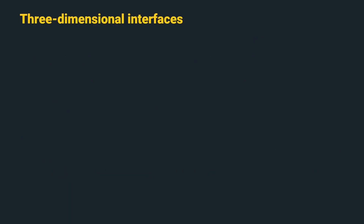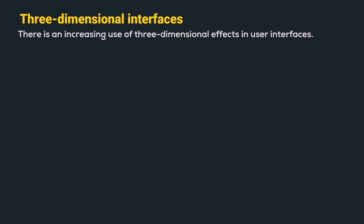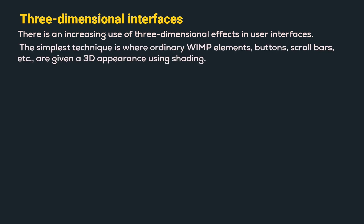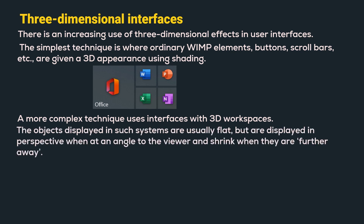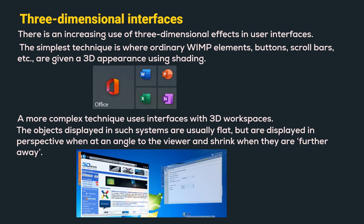The next interface style is three-dimensional interfaces. There is an increasing use of three-dimensional effects in user interfaces. The simplest one is where ordinary WIMP elements — buttons and scroll bars — are given a 3D appearance using shading. Here we can see an example where icons appear in 3D format. The next technique is more complex, where interfaces are used with 3D workspaces. The objects displayed in such systems are usually flat but they are displayed in perspective at an angle to the viewer and shrink when they are further away. Here is an example of a 3D workspace.